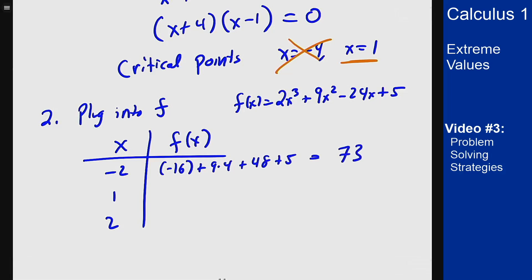I plug in x = 1, get 2 + 9 - 24 + 5, which is -8. I plug in positive 2, I get 16 + 36 - 48 + 5, which is 9.